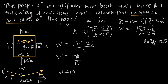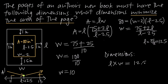So the dimensions that minimize the area of the page are 12.5 inches by 10 inches. And that's how you find the dimensions that minimize the area of a page.